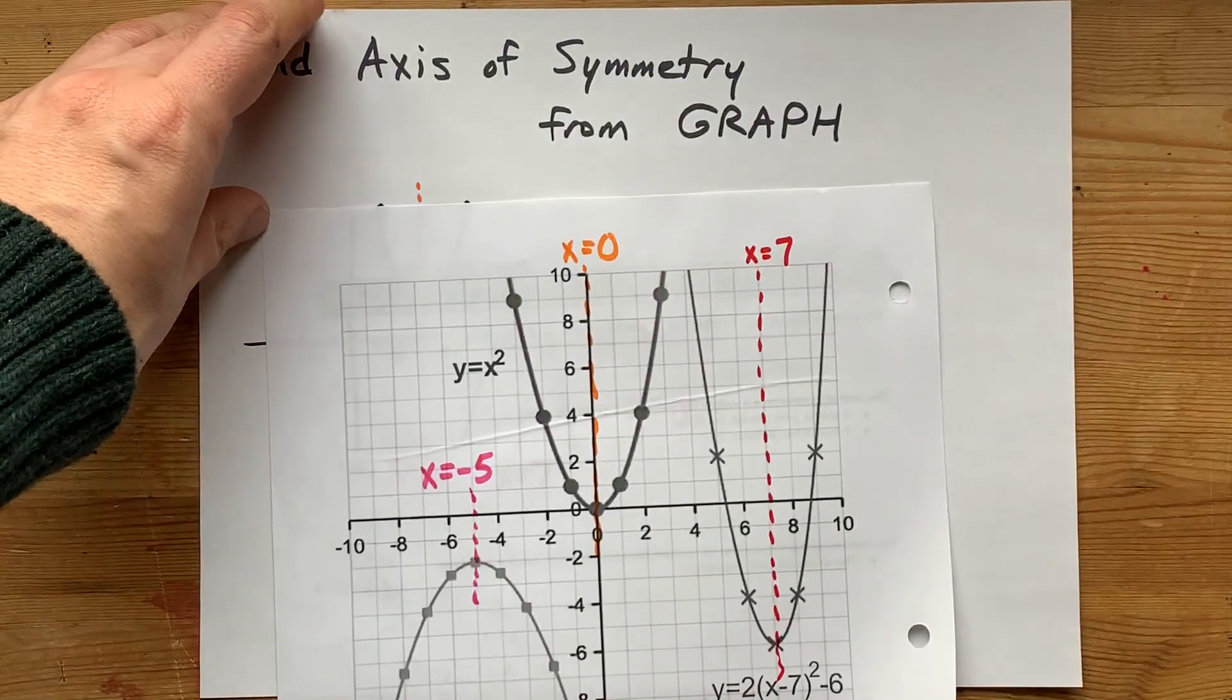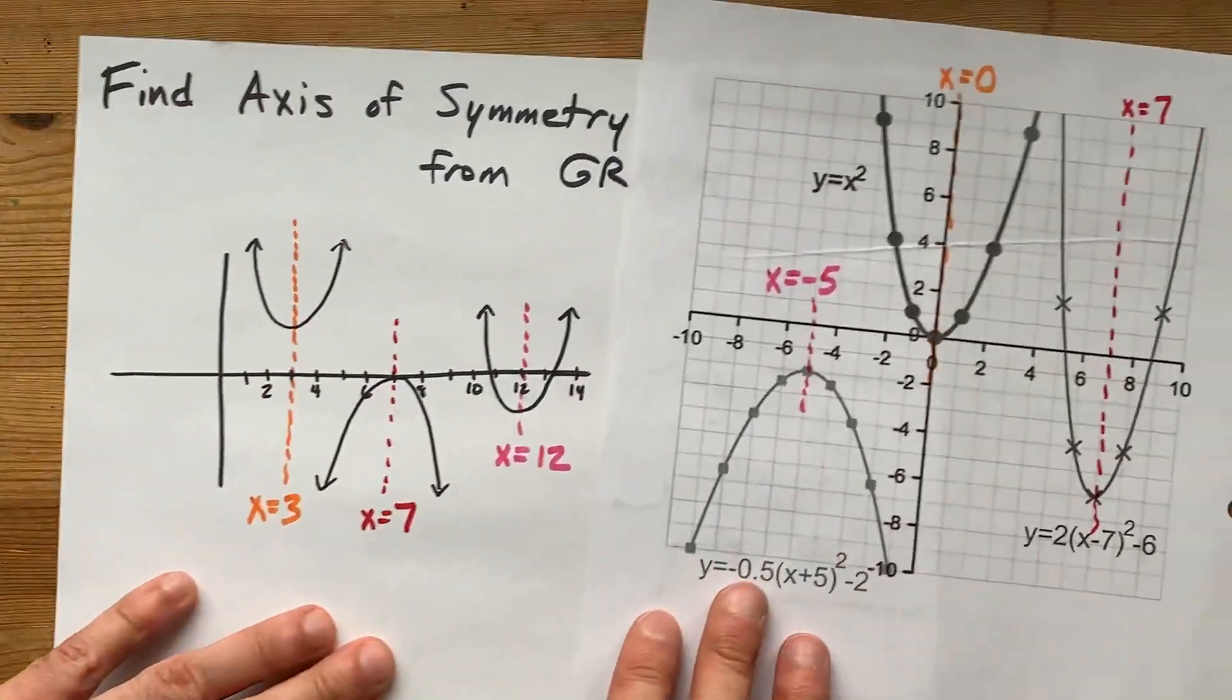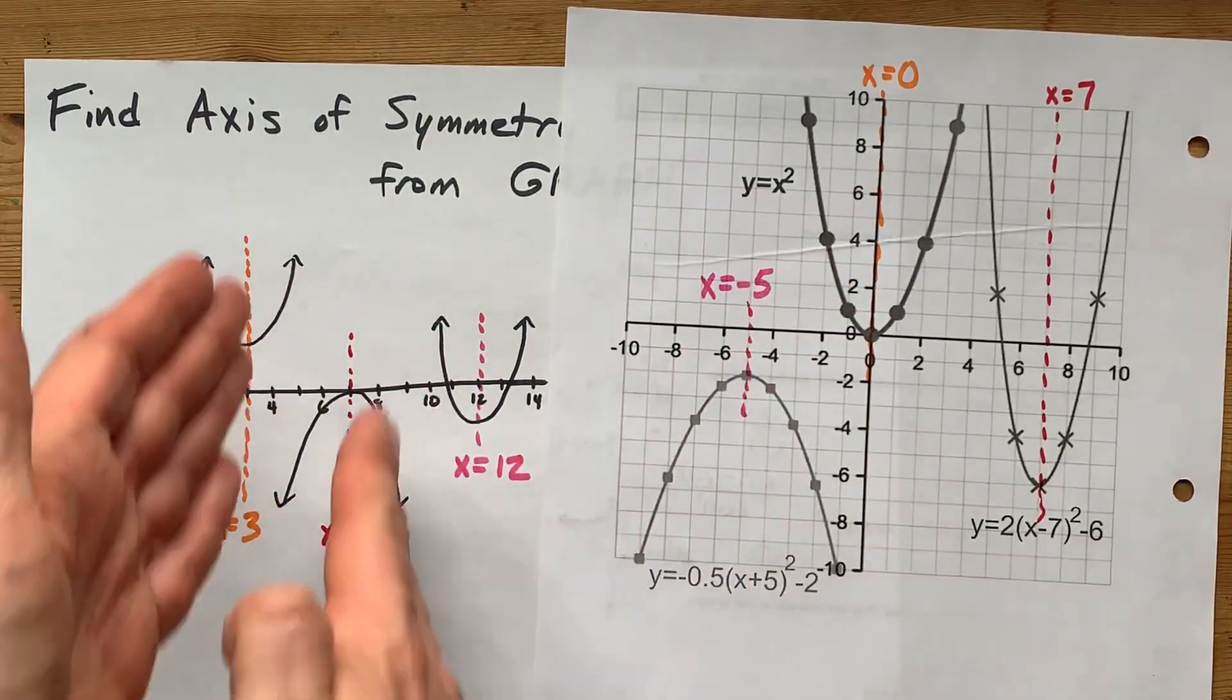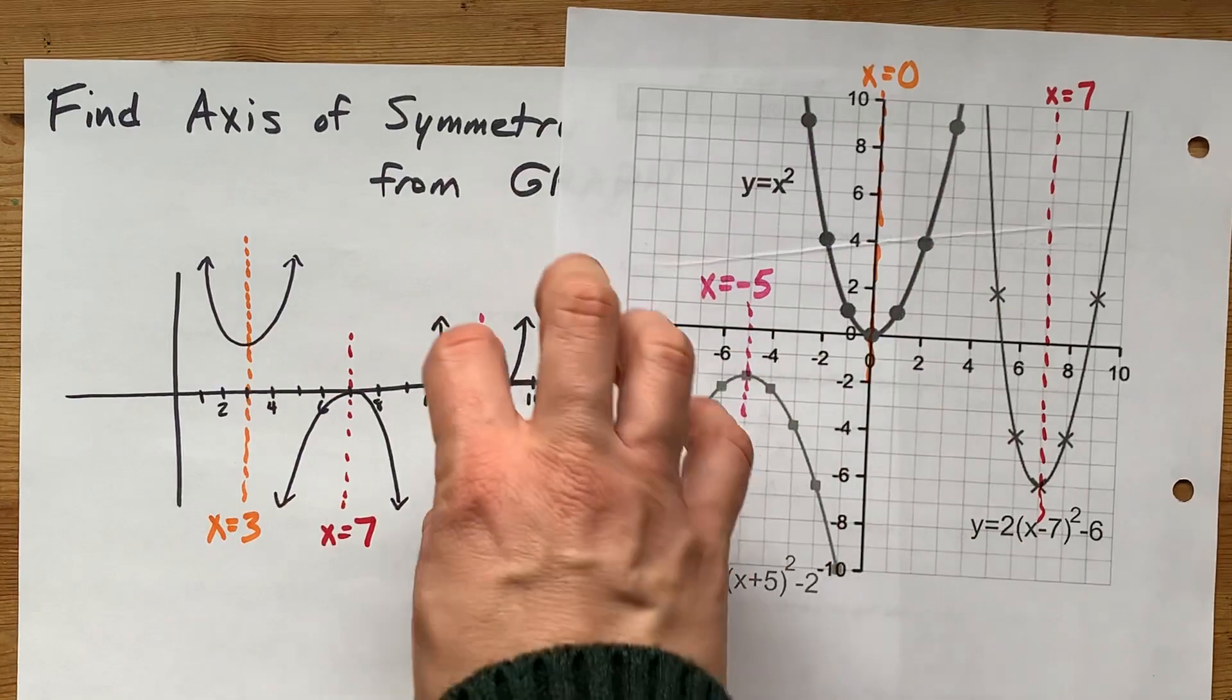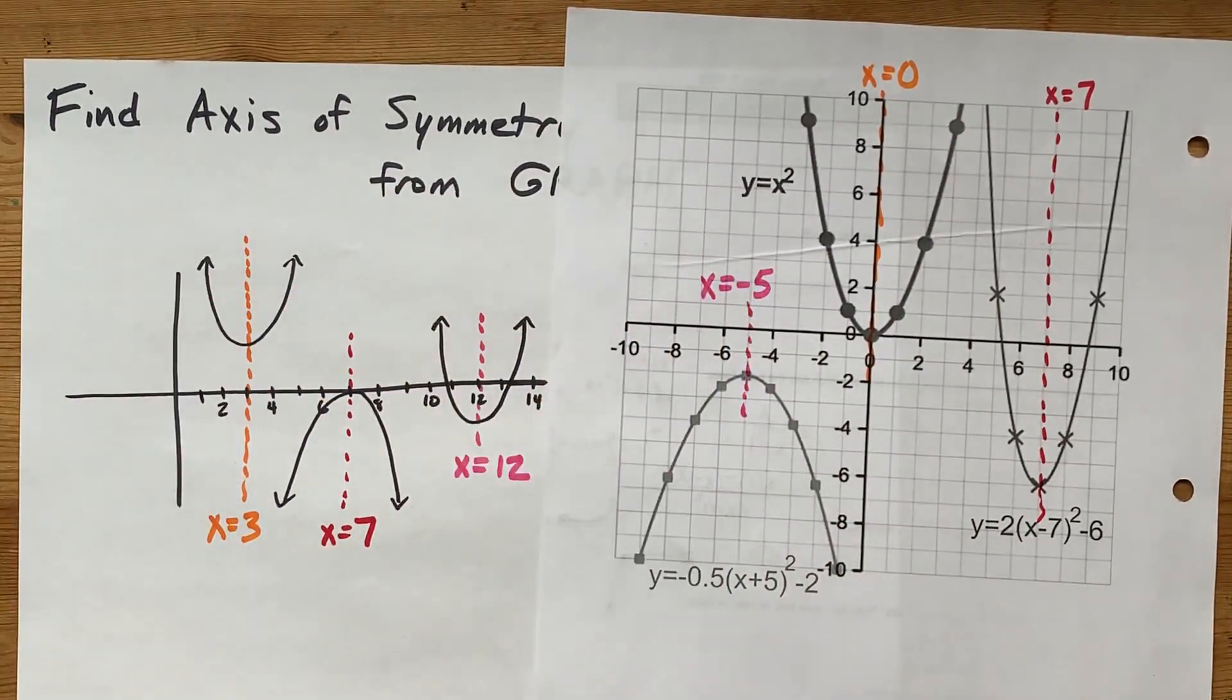From a graph, it's so easy. You're just cutting the parabola in half and stating where it hits the x-axis. That's the end. Congratulations. You did it. Best of luck. Thank you.